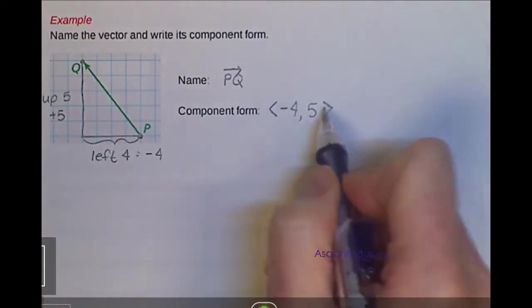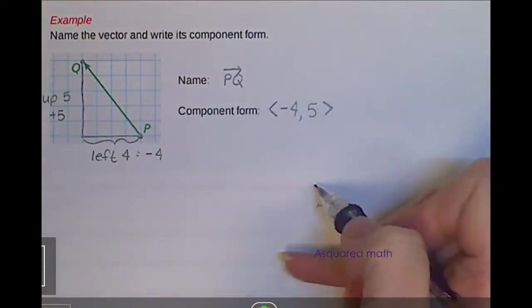So this type of bracket indicates that we're working with a vector and not just a point on a coordinate plane.